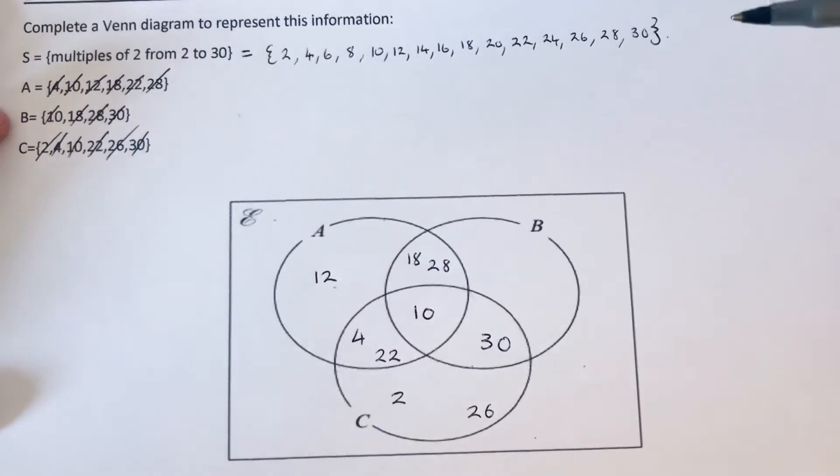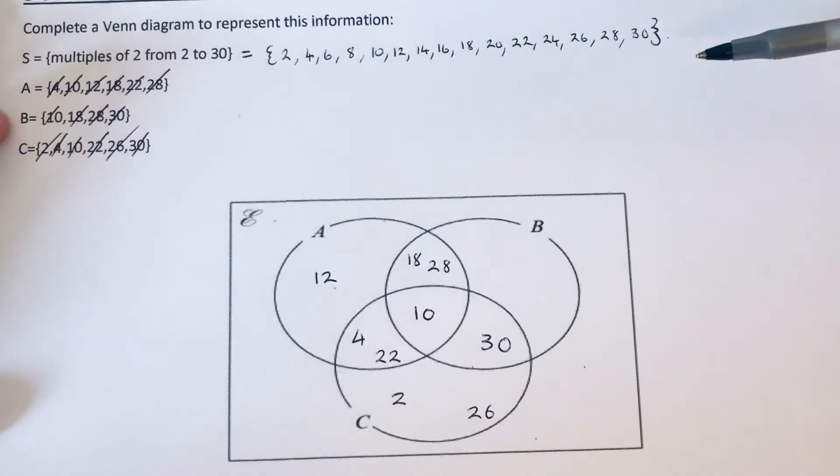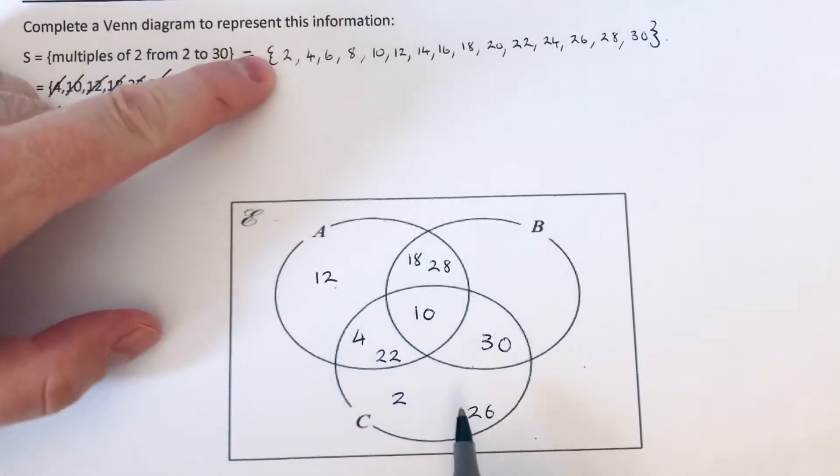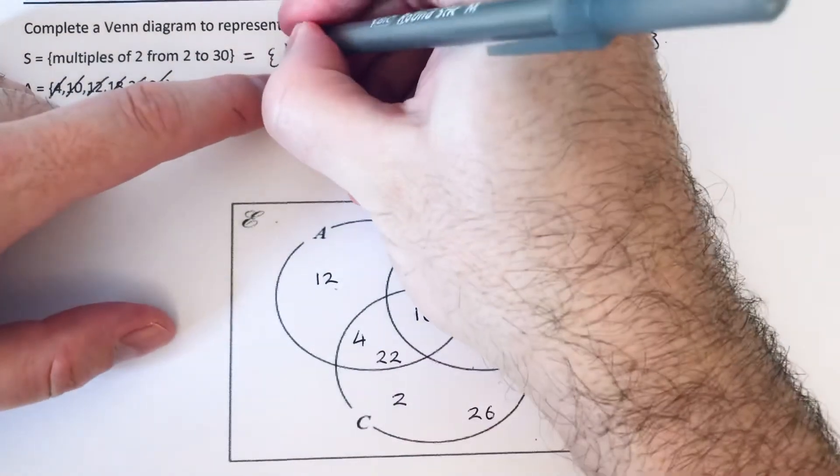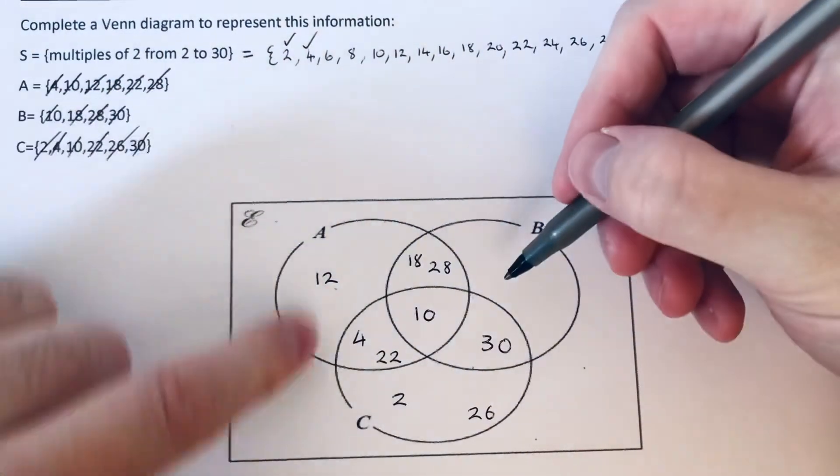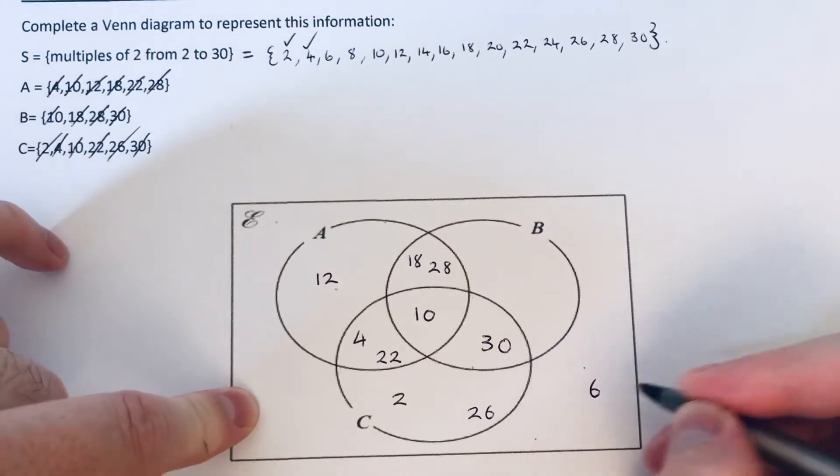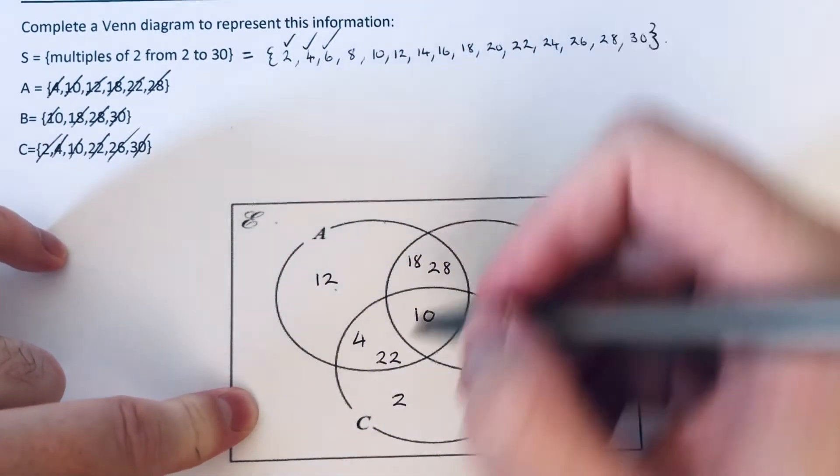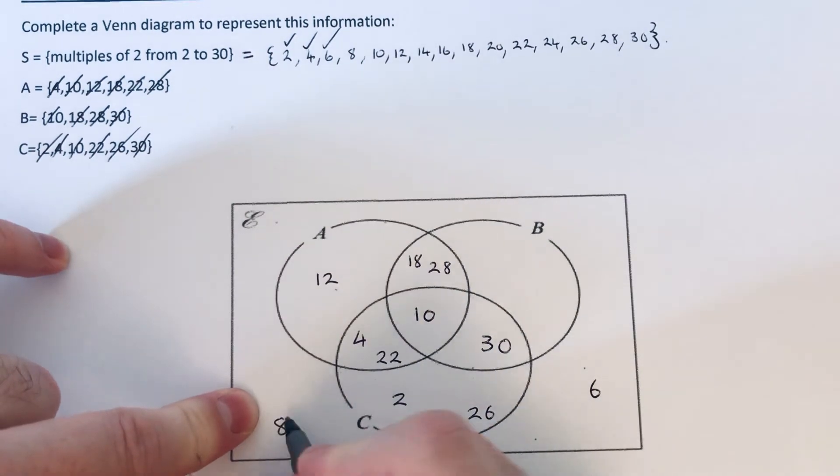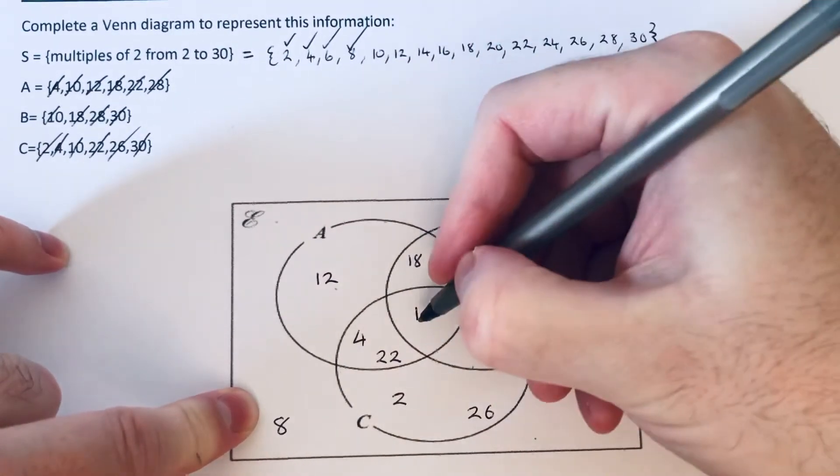So the numbers that we haven't put in the Venn diagram so far go on the outside. These are numbers which aren't in the three sets. So we've put 2 in, we've put 4 in, we've put 6 in—nope, we haven't put 6 in, so the 6 goes on the outside. 8, don't think we've put an 8 in, so that's on the outside. We've put a 10 in.